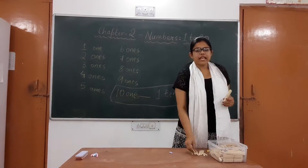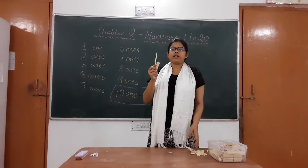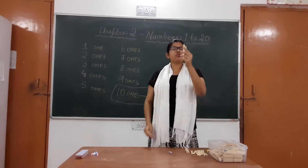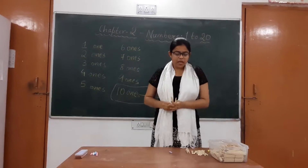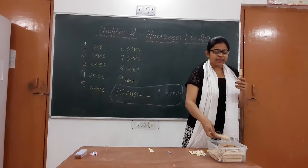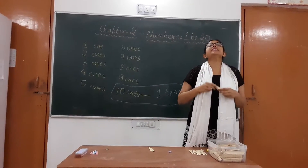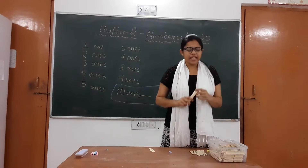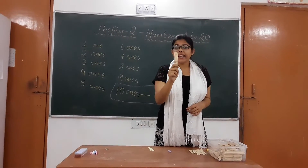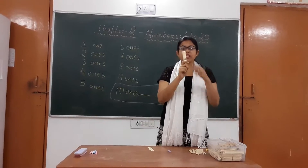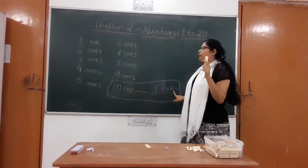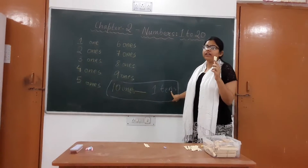These loose ice cream sticks are known as ones. When I have a single ice cream stick, I will call it 1-one. When I have 2, I will call it 2-ones. But when I have bundles like this, I will call it tens. This bundle is 10 ice cream sticks — that means 10-ones, which is equal to 1-ten.